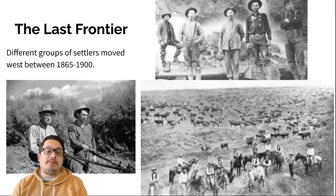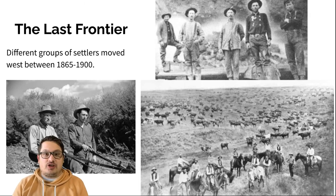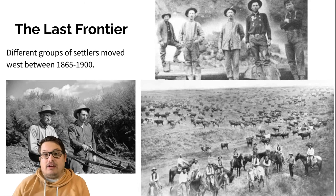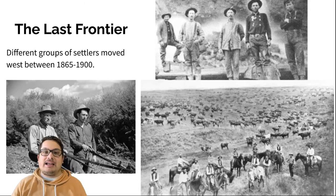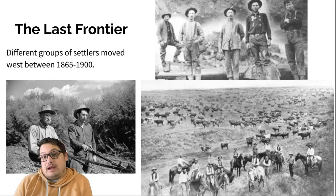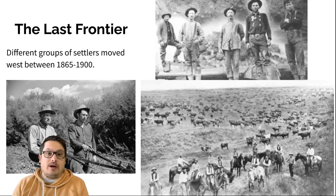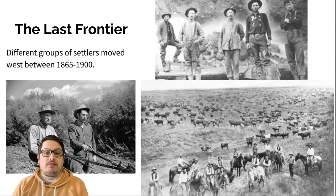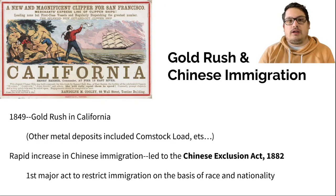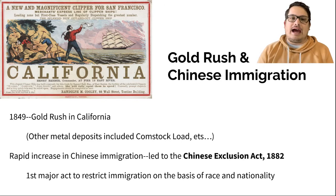You obviously have people who are already there — Native Americans and people of Spanish and Mexican heritage. But they're not part of Mexico anymore because we took that land away. And you are going to see an influx of people from Asia, and China in particular. The gold rush is going to be a huge factor in bringing immigrants out to the West.